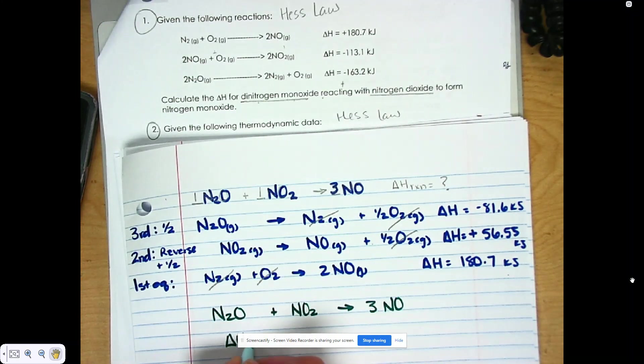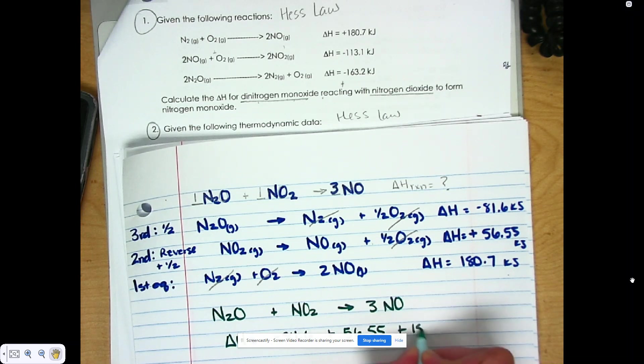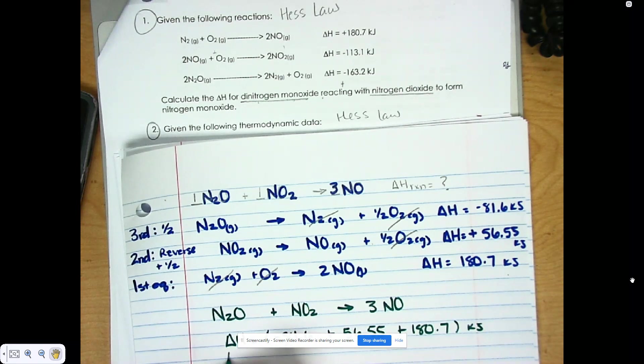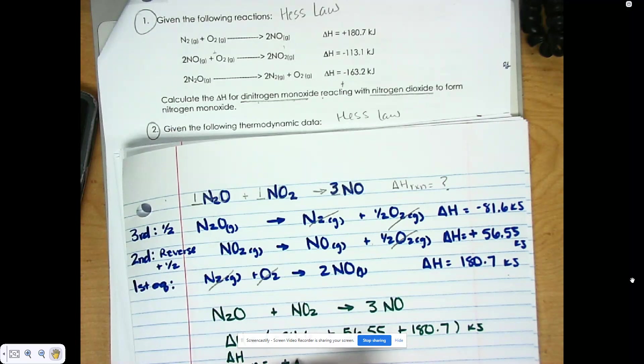So the delta H of our reaction is going to be negative 81.6 plus 56.55 plus 180.7. All of this is in kilojoules. So the delta H of the reaction is equal to those added together, and we get a positive 155.65 kilojoules.